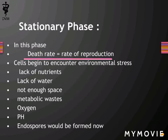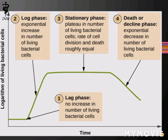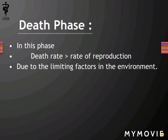The stationary phase means the death rate is equal to the rate of reproduction. Cells begin to encounter stress due to lack of nutrients, water, and space, as well as metabolic waste, oxygen levels, and pH changes. Endospores are formed in this phase. The graph shows a straight line for the stationary phase.